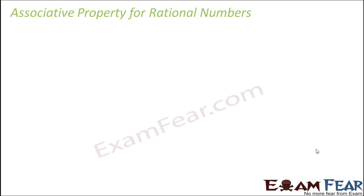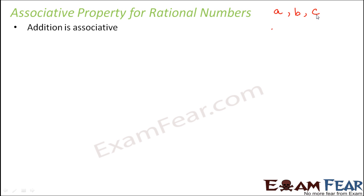Let us now talk about the third property, that is the associative property for rational numbers. Addition is associative. This property takes into consideration three different rational numbers — say a, b, c. As per associative property, a plus (b plus c) is equal to (a plus b) plus c. Even if we change the order of adding — add the first two then the third, or add the second and third then the first — the sum remains the same.